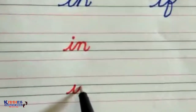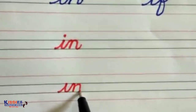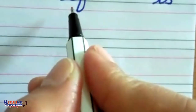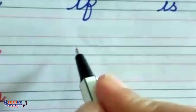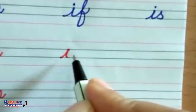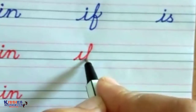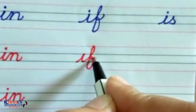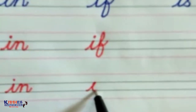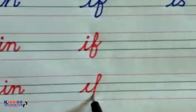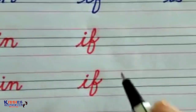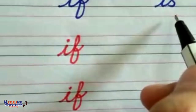Then the word 'in' — write 'i' then 'n', that's 'in'. Then the two-letter word 'if' — write 'i', then from here write the letter 'f'. First 'i', then 'if'.